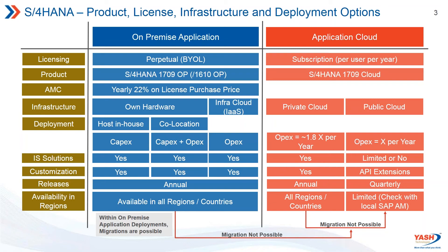With quarterly releases, customers need to be aware of what updates to adopt, since a quarterly update might break existing API extensions. Availability in regions should be verified with your local SAP account manager or partner. In the US, public cloud is available for professional services and baseline, but other regions need to be confirmed.